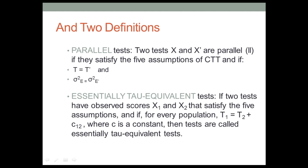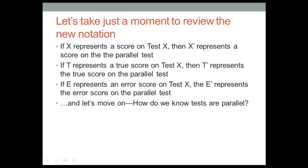Before we go on, let's make a note of the notation we're using. If x is a score on test x, then x prime is the raw score or obtained score on the parallel test. T is the true score on test x, and t prime is the true score on the parallel test. E is the error score on test x, and e prime represents the error score on the parallel test.